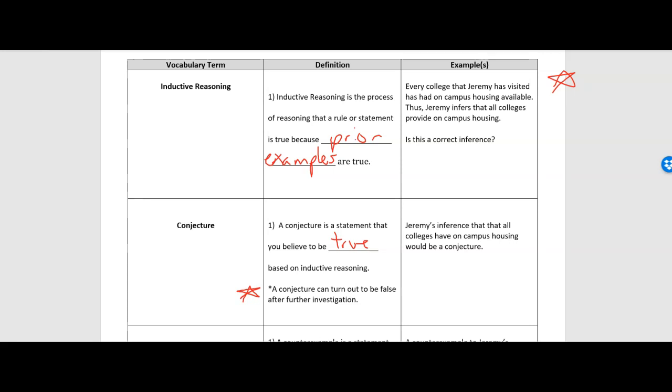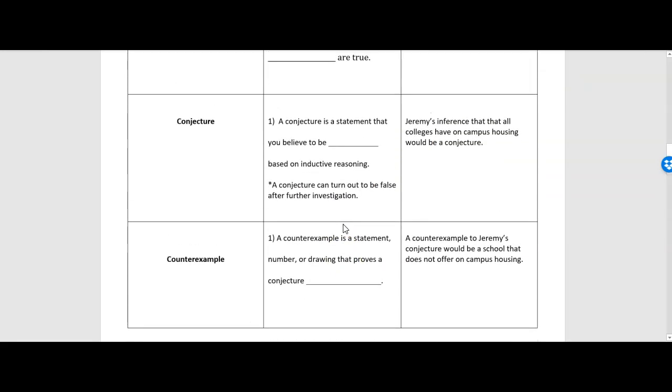But then, maybe a couple weeks later, we run across a new problem and we're like, oh, what I thought worked every time doesn't work every time. It just may work most of the time, or it may have just worked in the examples that I was given. So conjectures are what we think to be true, but they may turn out to be false after we do some more research.